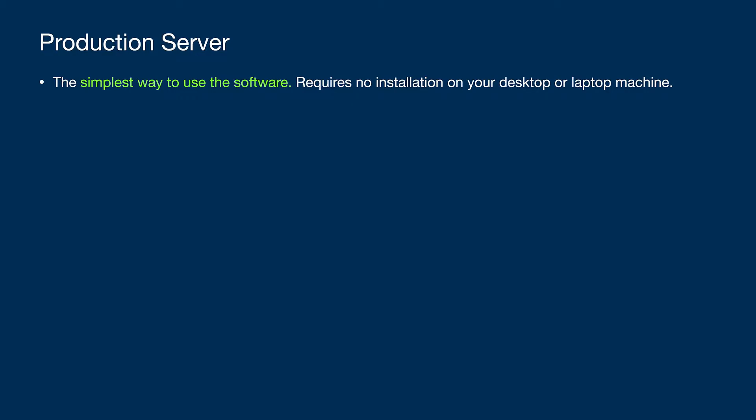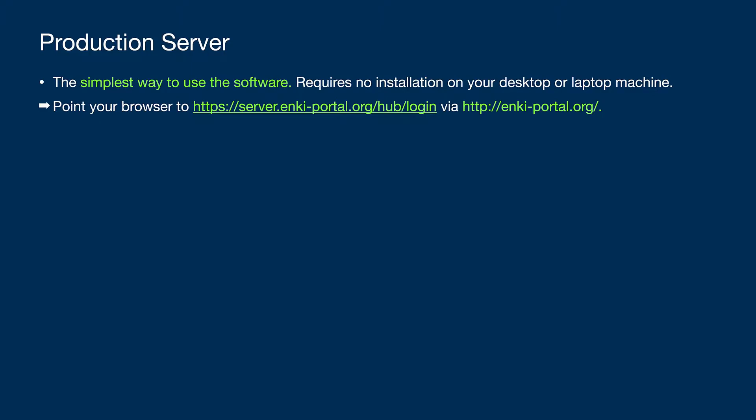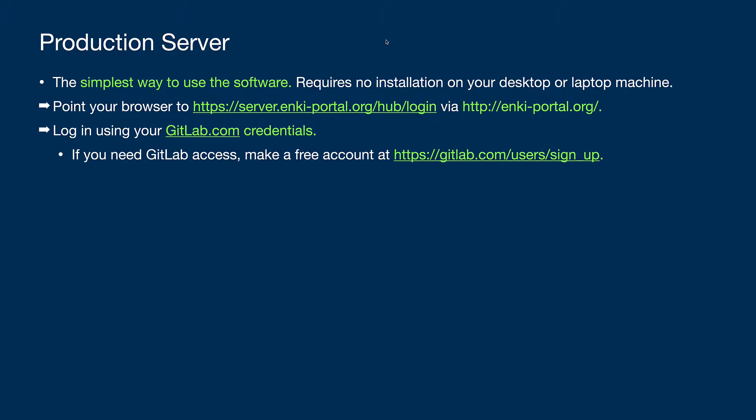The easiest way to access the Anki software is using the production server. The production server requires no installation on your desktop or laptop. Simply point any browser to the server URL, which is easily accessed through the Anki portal website, and log in with GitLab credentials. If you need GitLab credentials or don't have GitLab access, make a free account at gitlab.com.